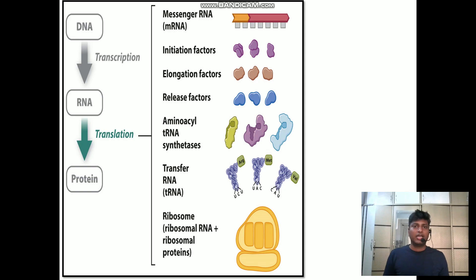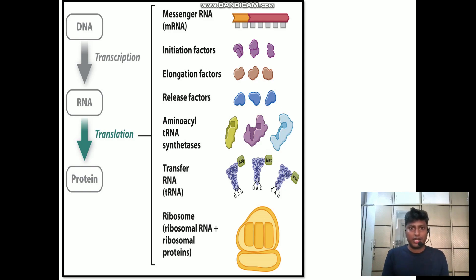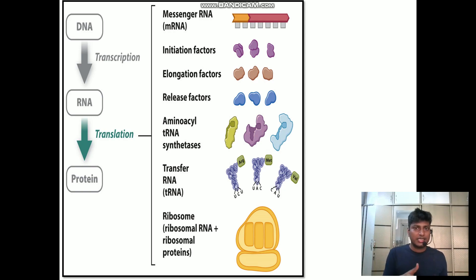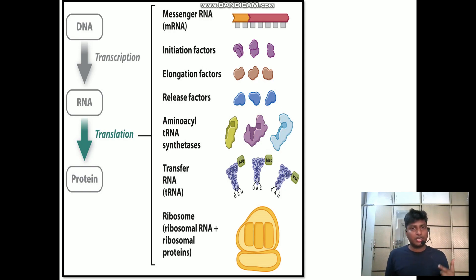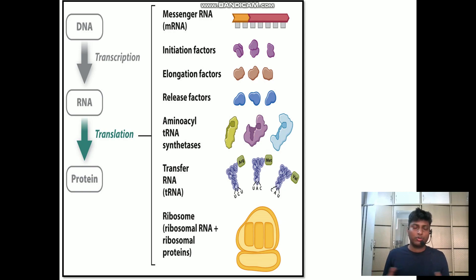Then there are termination factors, which are also important to stop the process of translation. Once the polypeptide chain is completely formed, it is going to be released in the cell. Please remember these three important factors: initiation, elongation, and termination factors. I will be talking about them when I come to the mechanism of translation in the part two video.